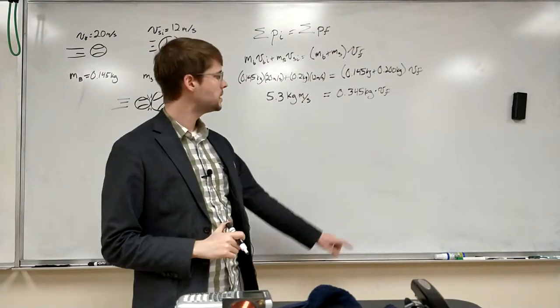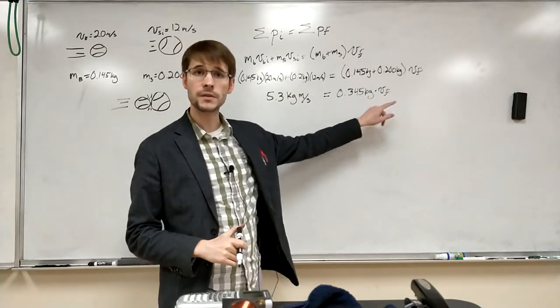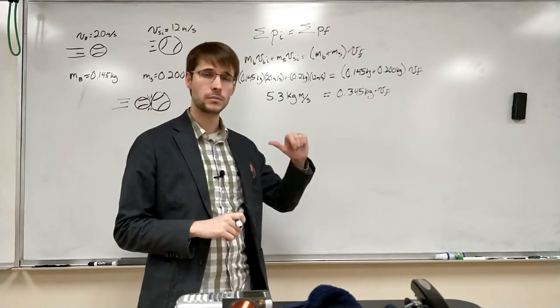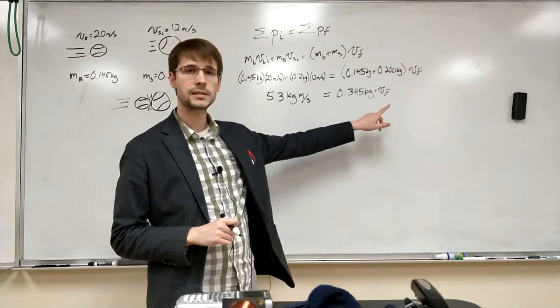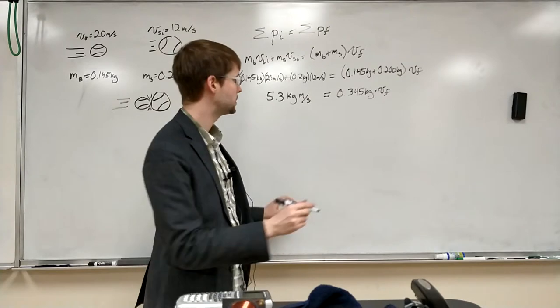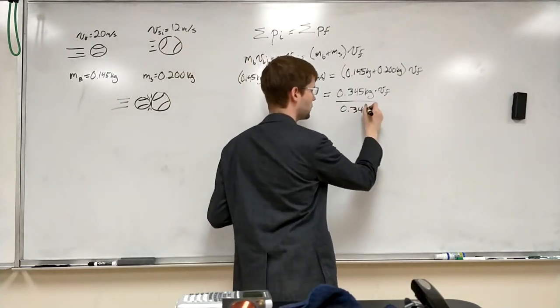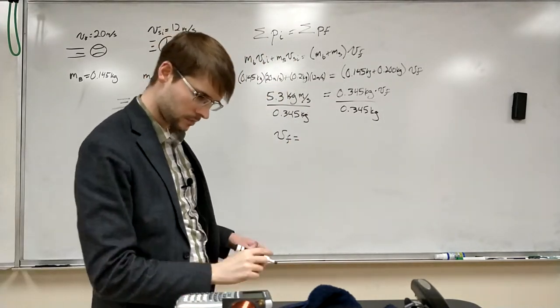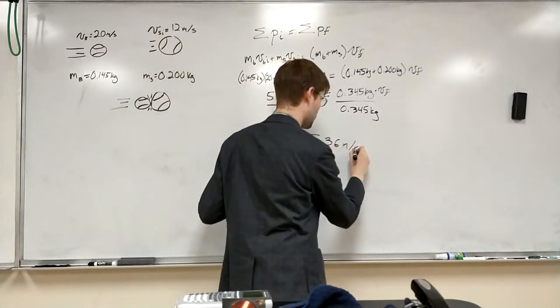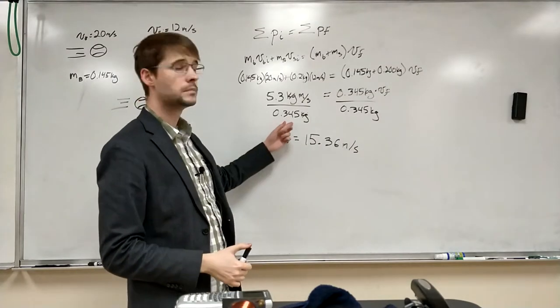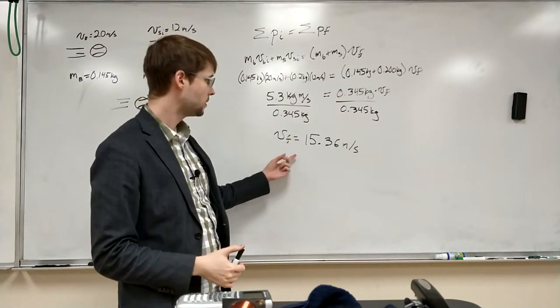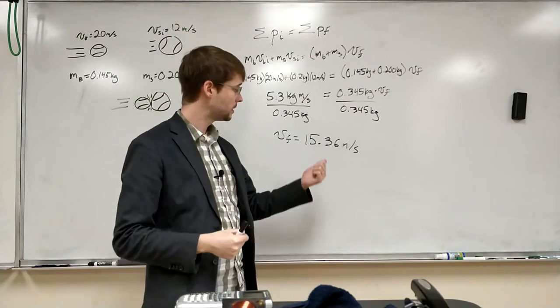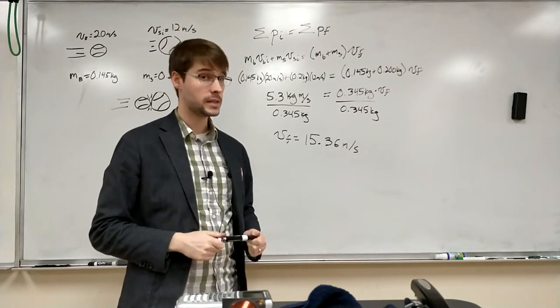All right, so we see here that it's just the total mass times the final velocity. That's going to be our final momentum. And that's going to be equal to the original momentum, our initial momentum. So to find this final velocity, all we have to do is divide both sides by this mass. And then we get to the end here that the velocity final of both these balls together is going to be 15.36 meters per second.